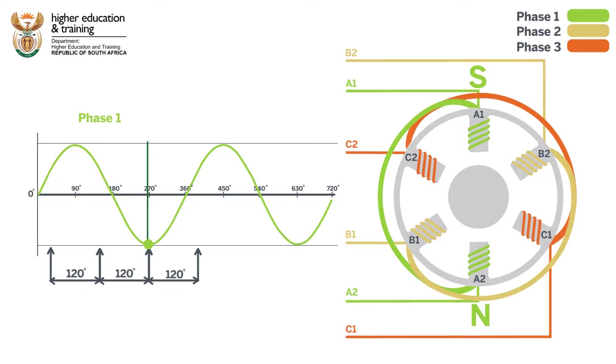Once again, at maximum voltage, we have maximum current and the strength of these poles is at their greatest. Then again, the voltage and current start to decrease before reversing polarity and the cycle begins again.